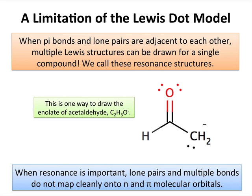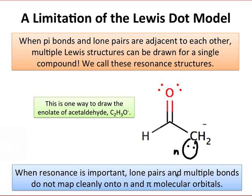Here's an example of this phenomenon at work. The compound shown is the enolate of acetaldehyde, C2H3O⁻. While you might immediately recognize that this carbon is negatively charged and possesses a lone pair in what appears to be an n-orbital, we can see that there's actually another way to draw this exact Lewis structure with the same sigma framework — the atoms in the exact same positions — with the only change being a reorganization of the pi-bonds and lone pairs.